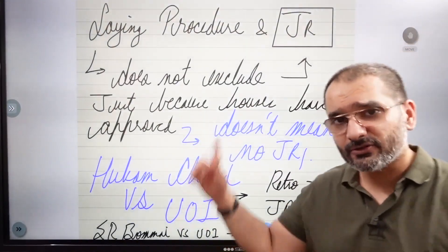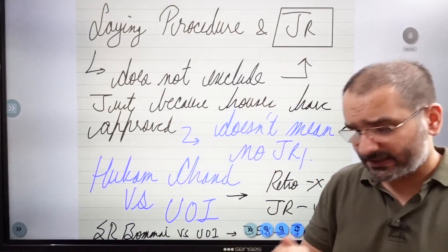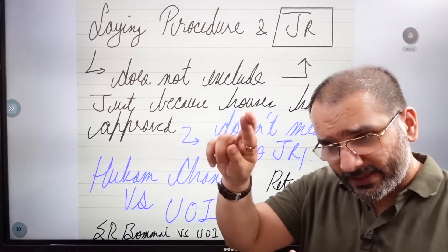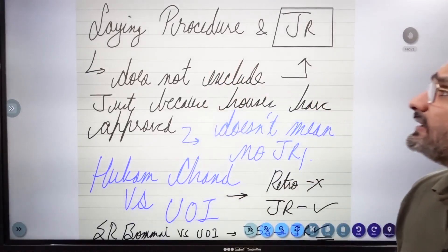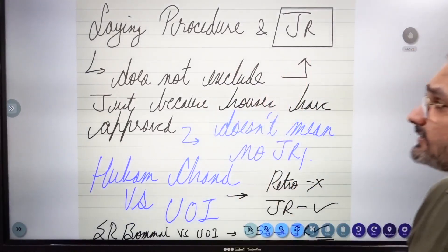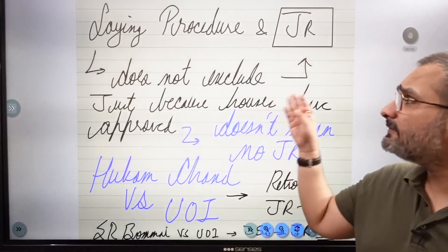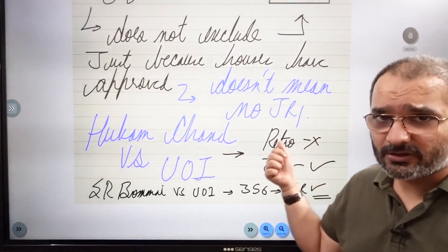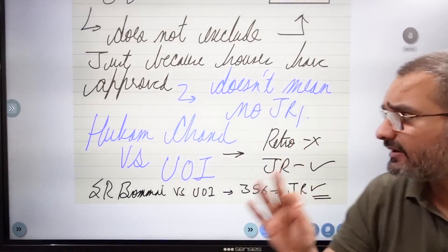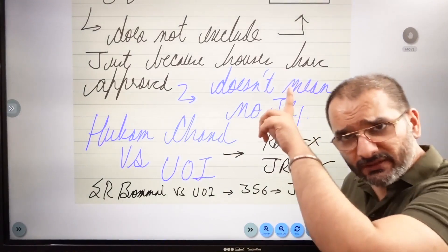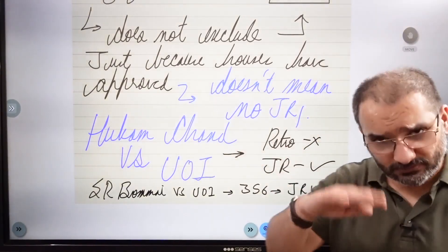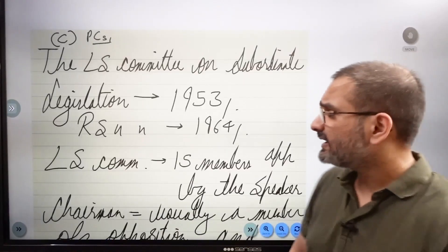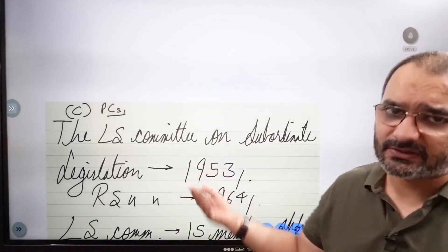Now, laying procedure and judicial review: just because the laying procedure exists does not mean that it excludes judicial review. Just because the houses have approved rules does not mean the court cannot look into them. This was clarified in Hukam Chand versus Union of India — a classic cardinal case law — in which it was held that you cannot make retrospective rules. Judicial review is still available. In S.R. Bommai versus Union of India, it was held that a proclamation of emergency under Article 356 can be challenged in a court of law.